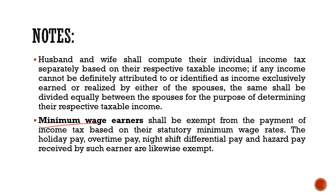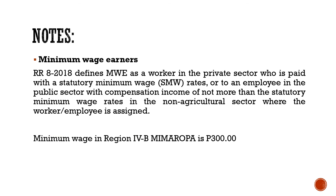Ano ba yung tinatawag nating minimum wage earner? Kailan ba masasabi na ikaw ay minimum wage earner? The Internal Revenue Regulations 8-2018 defines minimum wage earners as a worker in the private sector who is paid with the statutory minimum wage rate, or an employee in the public sector with compensation income of not more than the statutory minimum wage in the non-agricultural sector where the worker or employee is assigned. Kailan ka masasabi na minimum wage earner? Kapag ikaw ay nasa Region 4B (Maropa), masasabi na ikaw ay minimum wage earner kapag ang daily wage mo is ₱300 or below, which is the minimum wage in Region 4B.